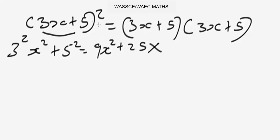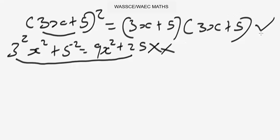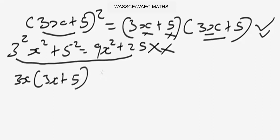When dealing with algebraic expressions that have a positive or negative sign inside, don't distribute the power directly — this is very wrong. It's only when there is no positive or negative sign inside the brackets that you can distribute powers. The correct way is to write it as two separate brackets and expand. So we expand: 3x times everything in 3x plus 5, then plus 5 times everything in 3x plus 5.